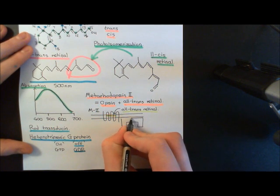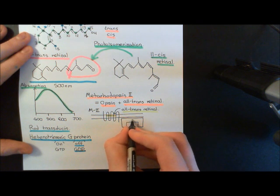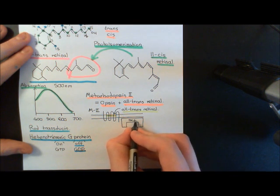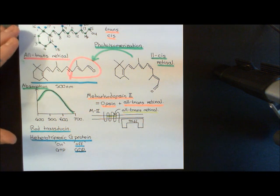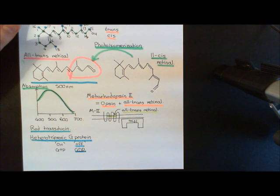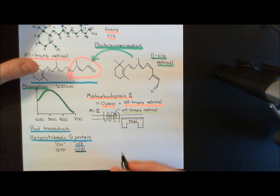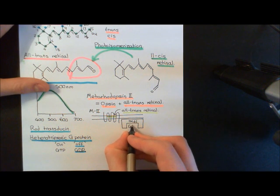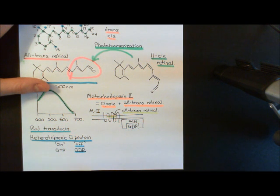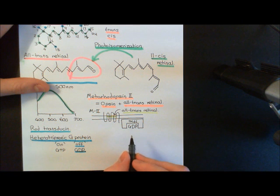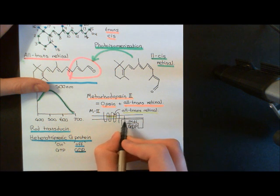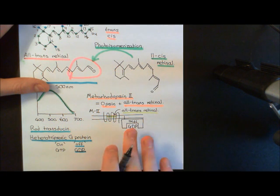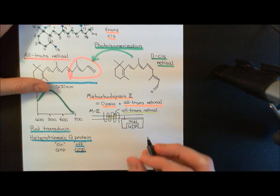The alpha subunit of rod transducin is named alpha-T1 — the T is for transducin, and the 1 tells you this is the rod alpha subunit, rather than the cone alpha subunit which is alpha-T2, a different protein. It's currently in the off state, so it has GDP (guanosine diphosphate) bound to it. It also has a lipid molecule attached to it, anchoring it in the phospholipid bilayer.